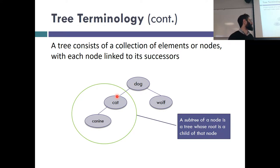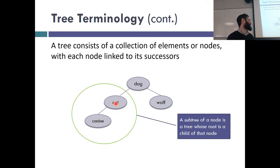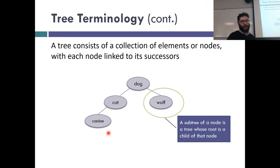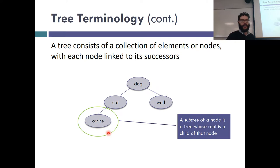What makes trees trees is that they're recursive — every node is the root of their own subtree. Dog is the root of his own tree made up of four nodes. Cat is the root of his own tree, with the left branch being canine and the right branch being nothing. Wolf is his own subtree — just himself. Canine is his own subtree — just himself.